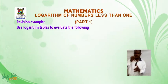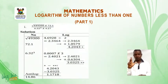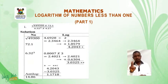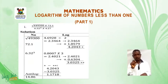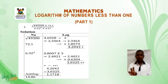Revision example: use logarithm tables to evaluate the following: root of 49300 times 72.1 all over 6.32 raised to the power 3 times 4.27.